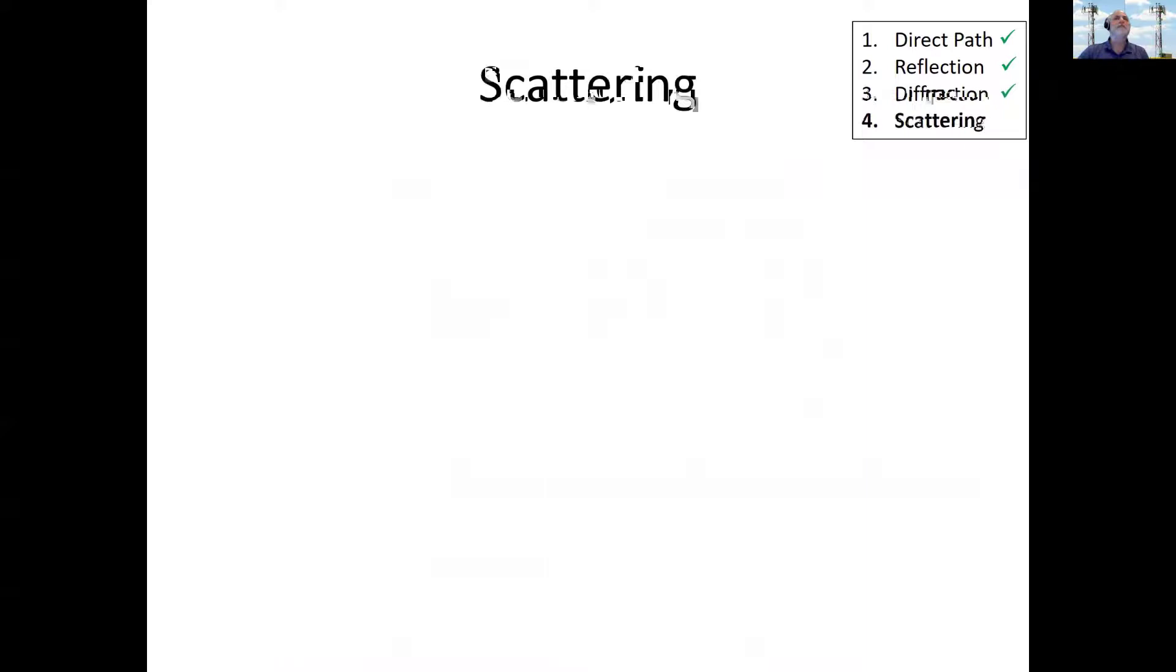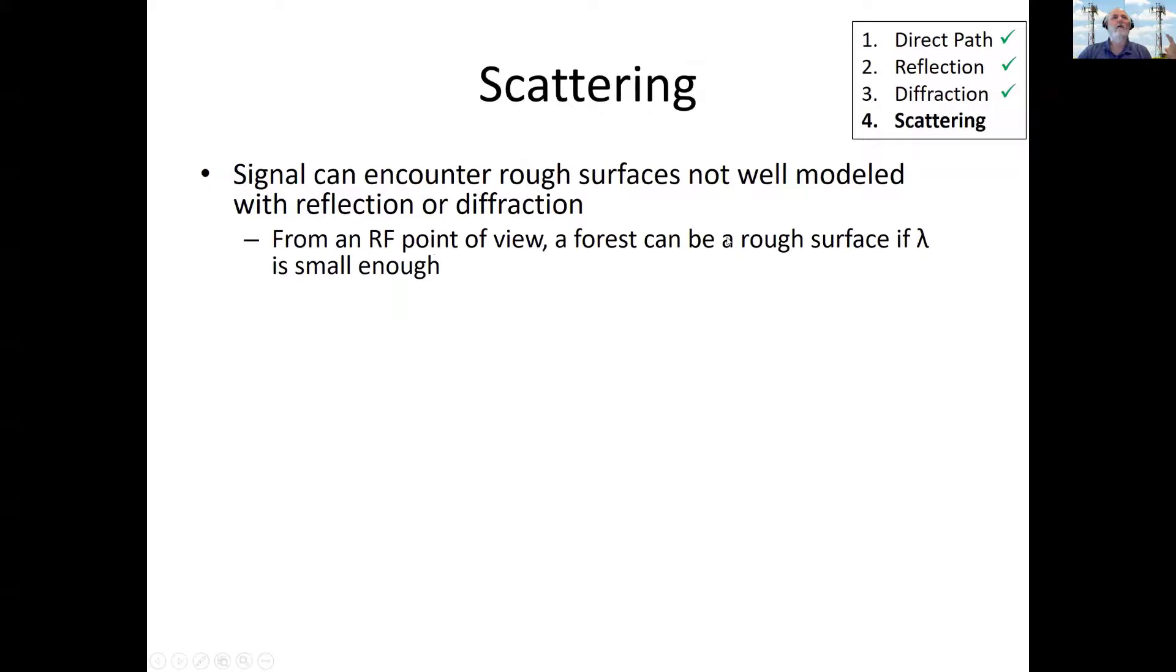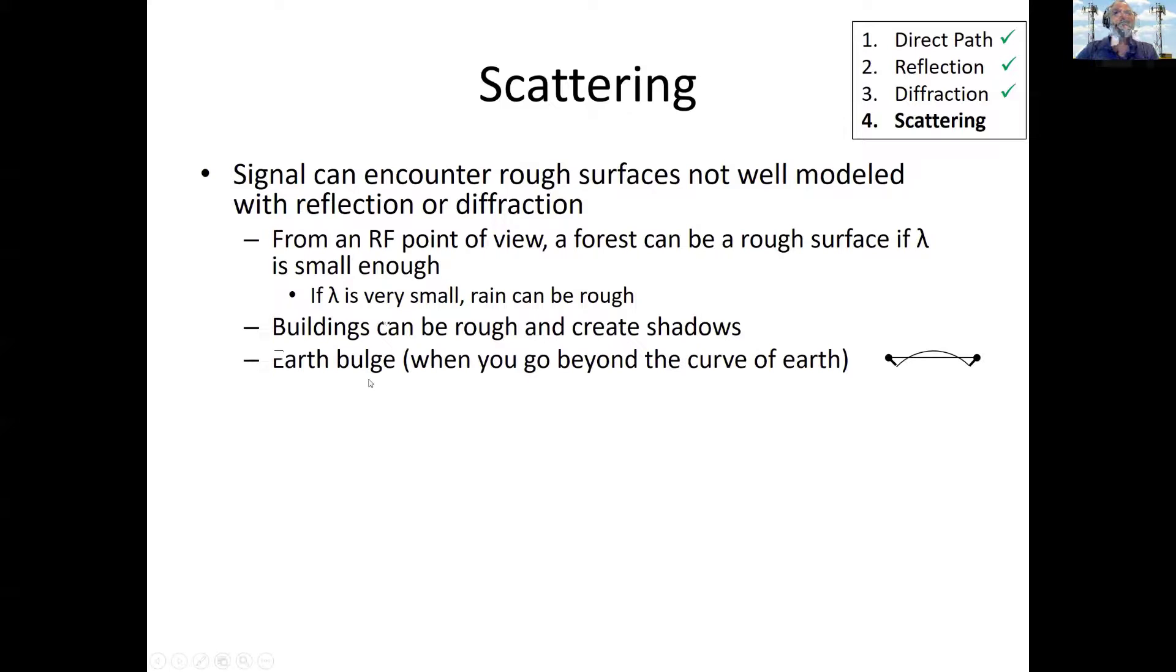The final propagation mode is what's called scattering. Scattering is what happens when you encounter rough surfaces, surfaces that are not well modeled by reflections and diffraction. For example, a forest can be viewed as a rough surface. The other side of a city, buildings can be viewed as a rough surface. If lambda is very small, rain can be viewed as a rough surface. For example, people that do satellite computations operate at higher frequencies, they have smaller lambdas, and they will worry about rain quite a bit. It's one of the reasons why your satellite television signal sometimes goes out in a strong rainstorm. Buildings on the other side of the city can create shadows and operate as a rough surface.